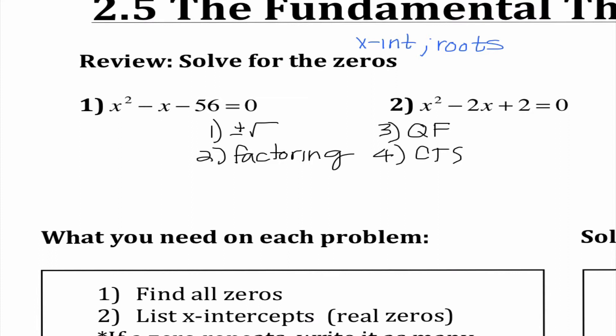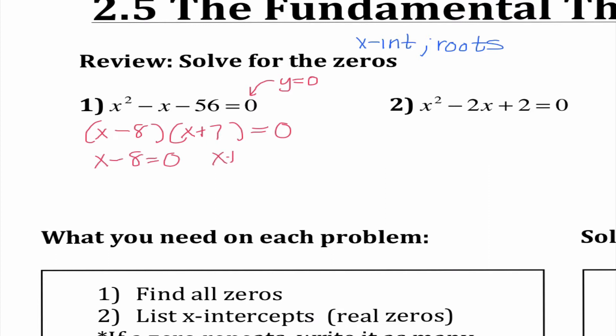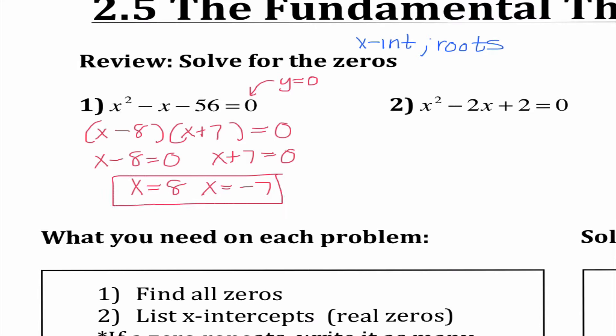Let's get started on number one. We know that zero means y equals zero — that's why we set it equal to zero. I always see if we can factor something first. Here I just have a quadratic equation. I know factors of negative 56 that add up to be negative 1 would be negative 8 and 7. So I get x equals 8 and x equals negative 7. If they specifically ask us to find the x-intercepts, that's when I should write it as an ordered pair.